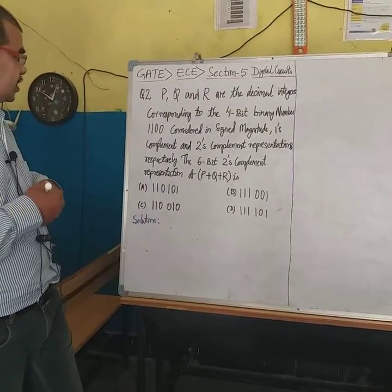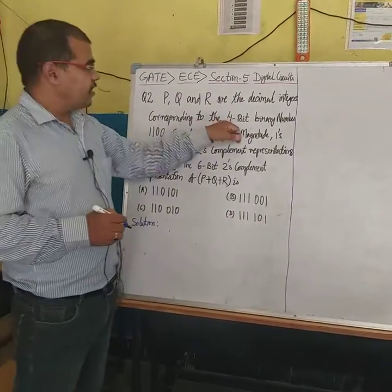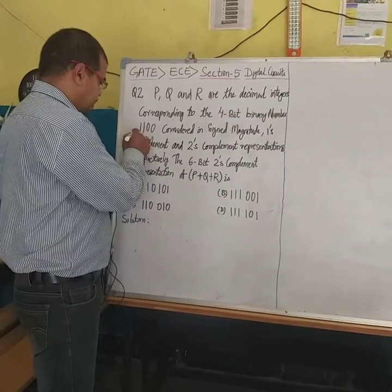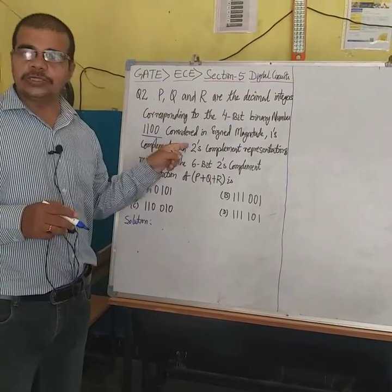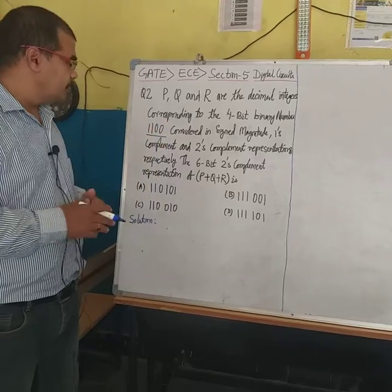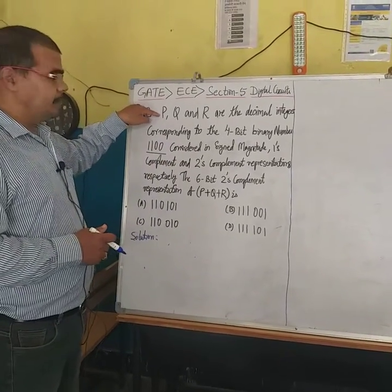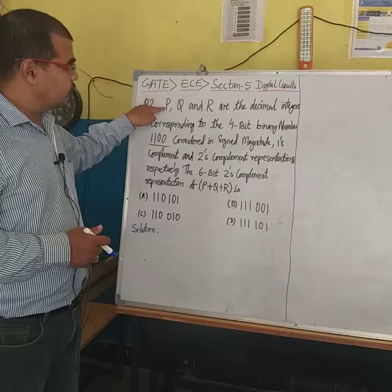The question is telling us that we are having a 4-bit binary number: 1100. We are going to find P, Q, and R from this number.